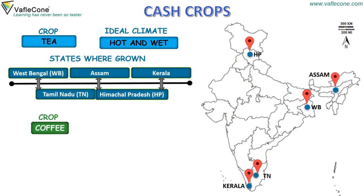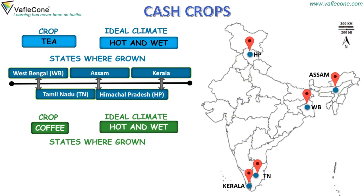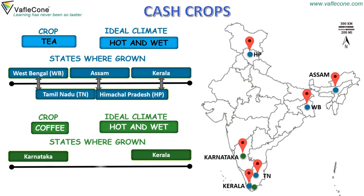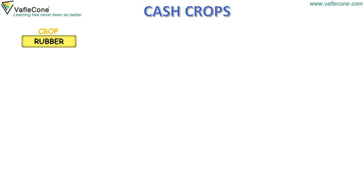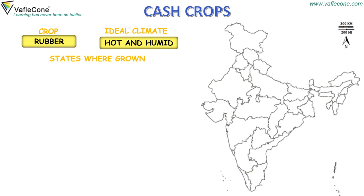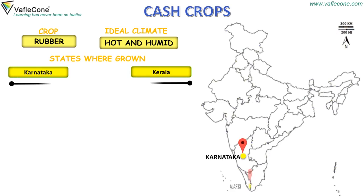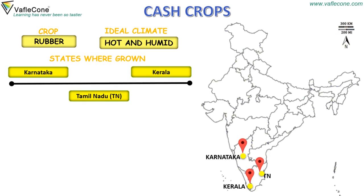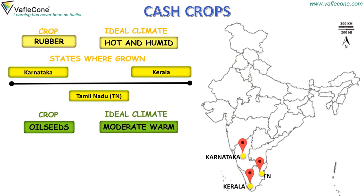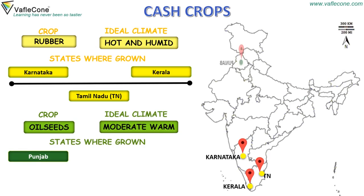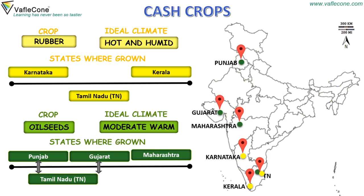Coffee. The ideal climate for coffee is hot and wet. States where coffee is grown are Karnataka, Kerala and Tamil Nadu. Rubber. The ideal climate for rubber is hot and humid. States where rubber is grown are Karnataka, Kerala and Tamil Nadu. Oil seeds. The ideal climate for oil seeds is moderate warm. States where oil seeds are grown are Punjab, Gujarat, Maharashtra, Tamil Nadu and Andhra Pradesh.